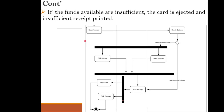If the customer's funds are insufficient — meaning the withdrawal amount is greater than the available balance — the ATM prints a receipt indicating insufficient funds, the card is ejected, the customer collects the receipt, and the process ends with a final state symbol. There is nothing more the customer can do at that point.